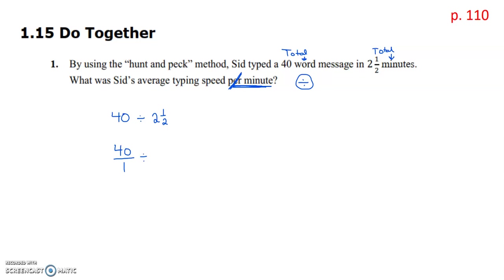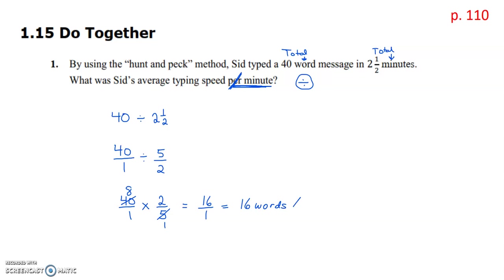Our mixed number, two and a half minutes, needs to change to an improper fraction: five over two. With division, we keep the first fraction, flip the second fraction, and change to multiplication — keep, change, flip to two-fifths. We cross-reduce by dividing by five, then multiply numerator times numerator and denominator times denominator. The answer is 16 — his average typing speed is 16 words per minute.